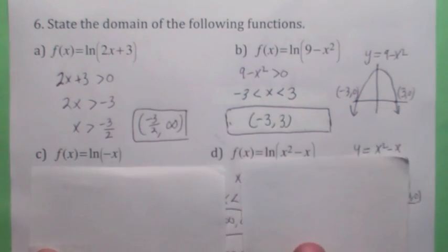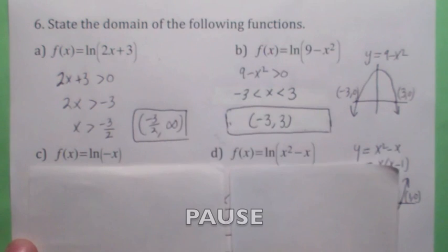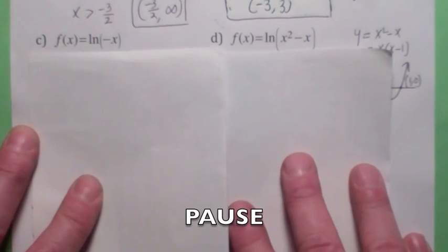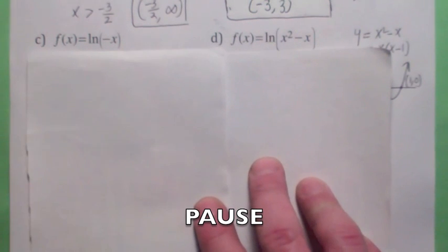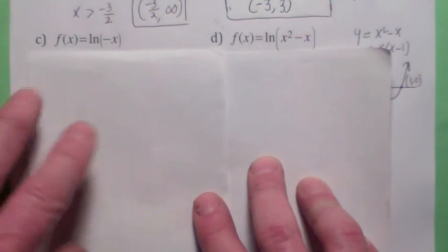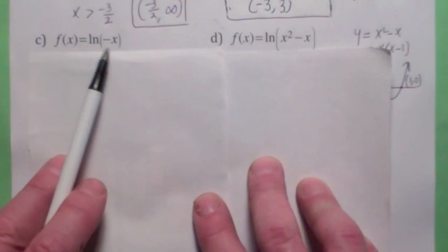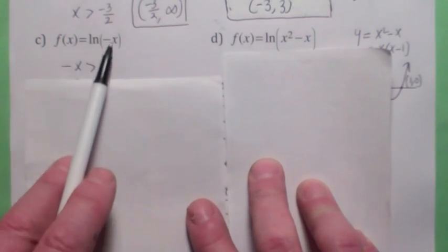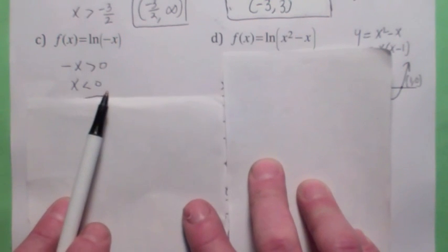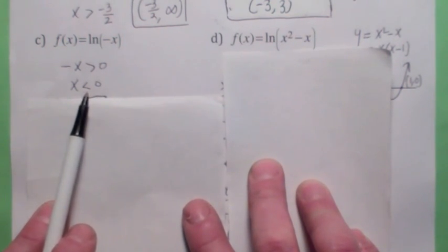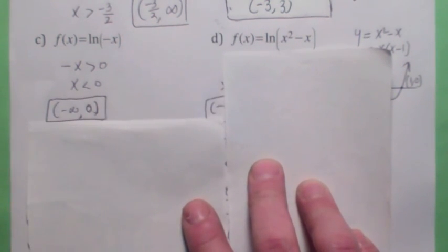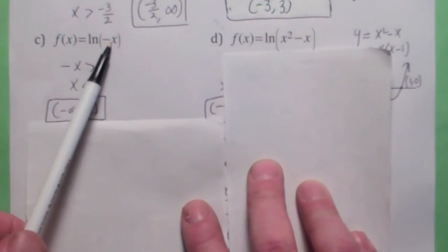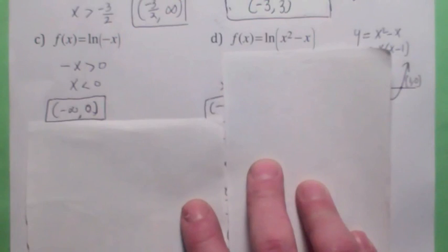Hit the pause button and try these. For the first one, be careful — it looks like it might be undefined. But what's inside the argument must be greater than 0. If negative x is greater than 0, then x must be less than 0 when you multiply by negative 1. So the domain is negative infinity to 0. This is actually a reflection of the natural logarithm function across the y-axis.